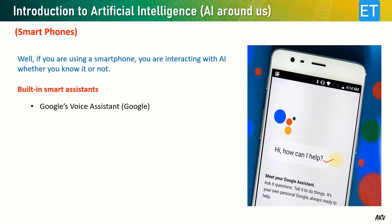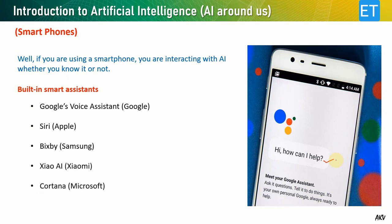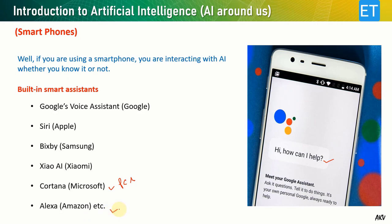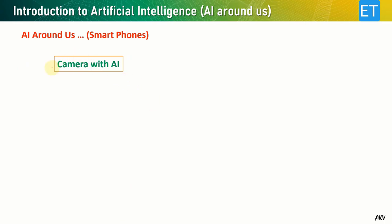Similar voice assistants are found in other smartphones developed by various companies — Apple has Siri, Samsung has Bixby, Xiaomi has Xiao AI, and Microsoft has Cortana for PCs. Amazon's Alexa is very famous — you can ask it to play a particular song, and when combined with smart hardware like lights and fans, you can give commands to operate them.